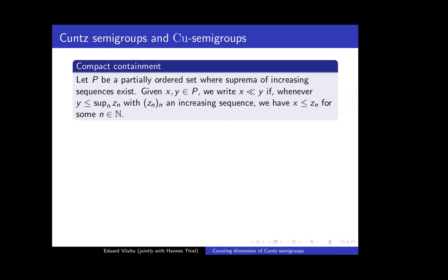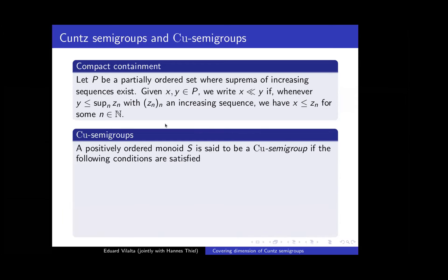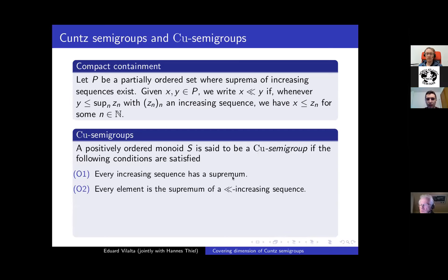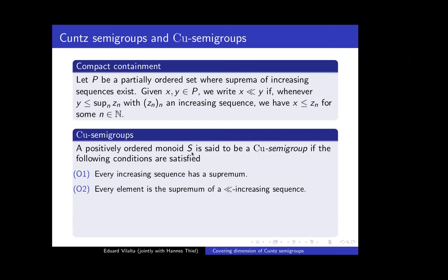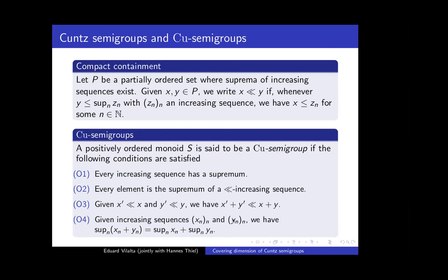Using this notion, we can define CU semi-groups as follows. A positive pre-ordered monoid is a CU semi-group if it satisfies four conditions. The first is that every increasing sequence has a supremum. The second is that every element is the supremum of a way-below increasing sequence — given some element x in S, there is some sequence z_n such that z_n is way below z_{n+1} and x is the supremum of that sequence. The third is a compatibility condition: if x' is way below x and y' is way below y, then x' plus y' is way below x plus y. The last condition states that given two increasing sequences x_n and y_n, the supremum of the sum of these sequences is actually the sum of the suprema.